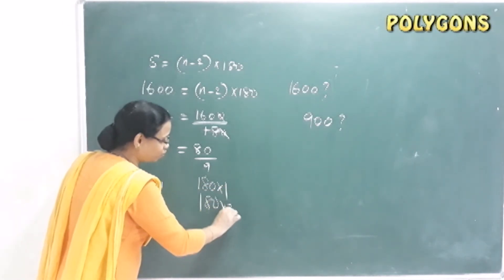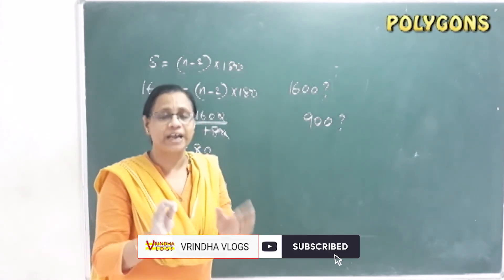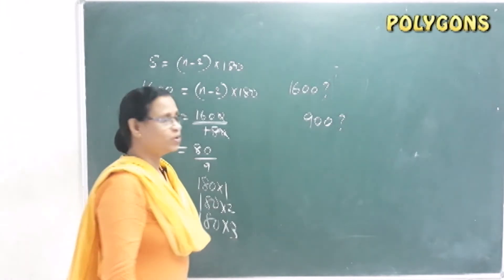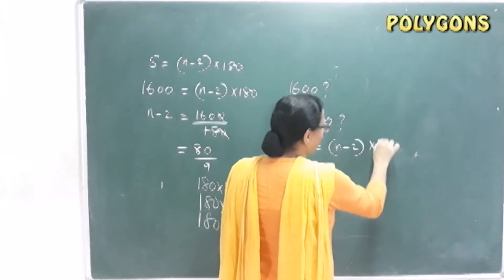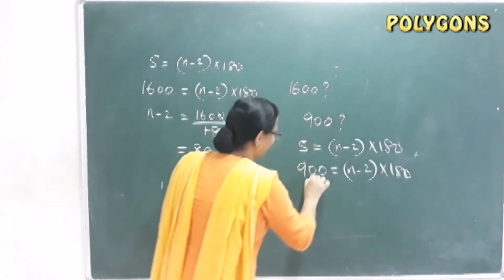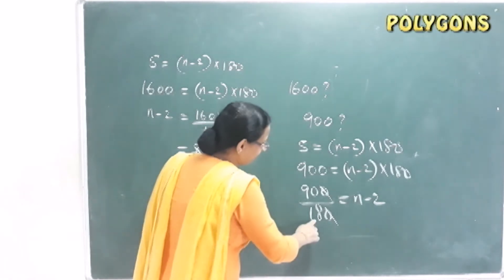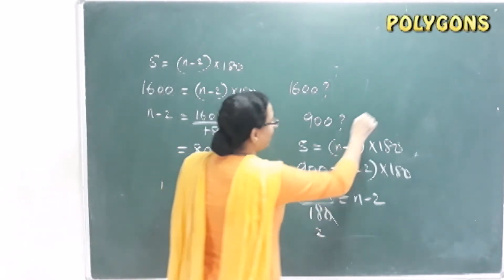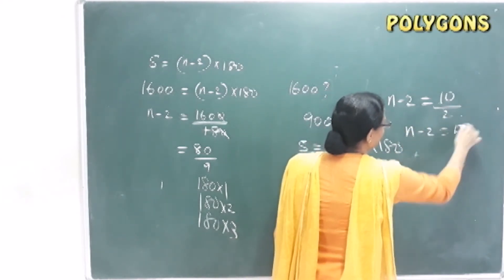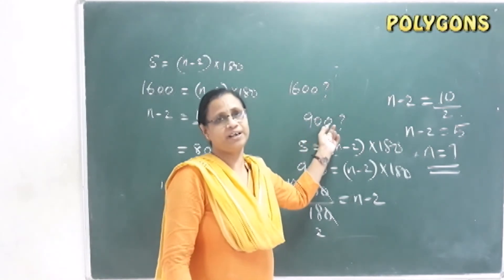The sum of angles must be a multiple of 180. For 900: S = (N − 2) × 180, so 900 ÷ 180 = N − 2. That gives 5 = N − 2, so N = 7. Seven-sided polygon has an angle sum of 900 degrees.